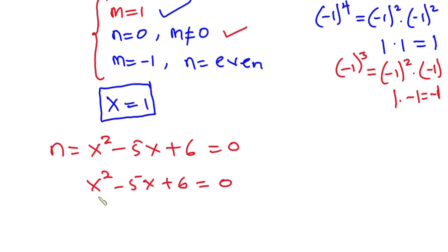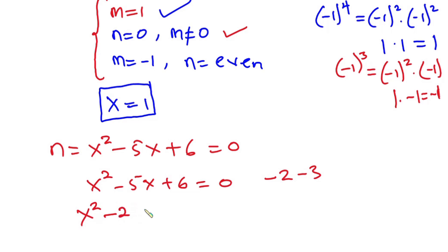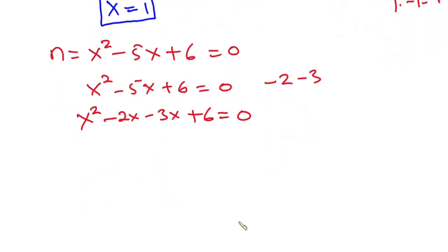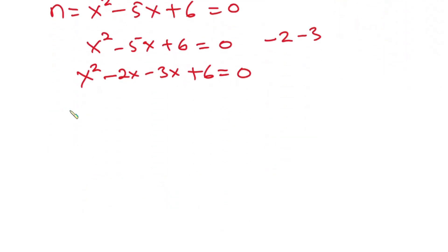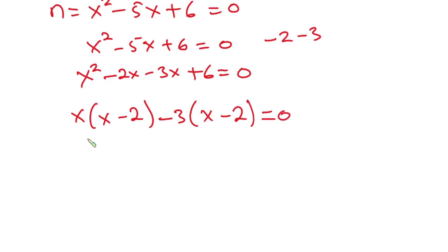We will find two numbers that when multiplied give 6 and when added give negative 5. Those numbers are negative 2 and negative 3. So we rewrite the equation as x squared minus 2x minus 3x plus 6 equals 0, which factors as x times (x minus 2) minus 3 times (x minus 2) equals 0.